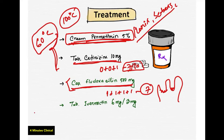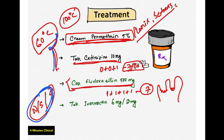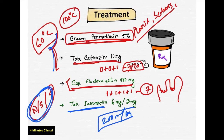In case of Norwegian scabies or severe scabies where topical treatment is insufficient, we can shift to oral anti-scabies drugs — Ivermectin. The dose is 200 micrograms per kilogram body weight. This is available as Tablet Ivermectin 6mg or 3mg, prescribed according to the body weight of the patient.